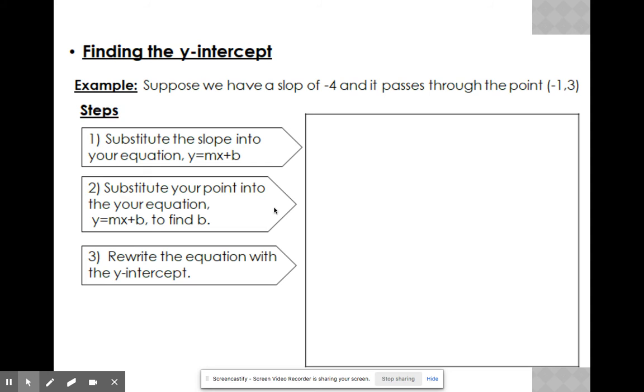So now let's look at an example here. Suppose we have a slope of negative 4, and it passes through the point negative 1, 3. And so what we can do is say, we have this equation y equals mx plus b, right?